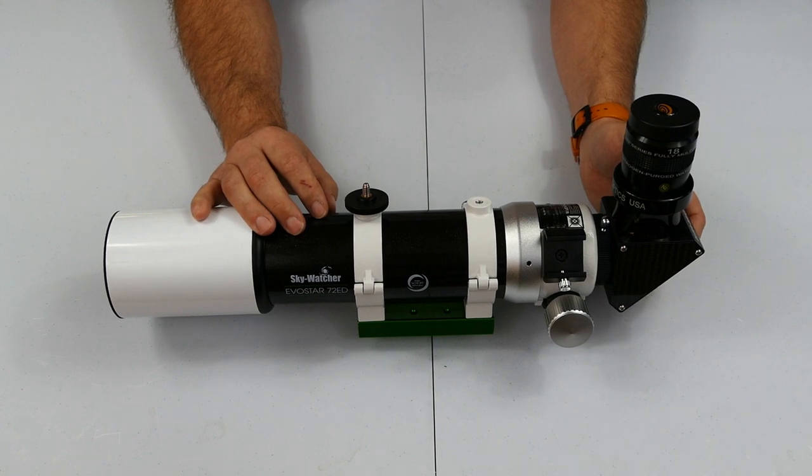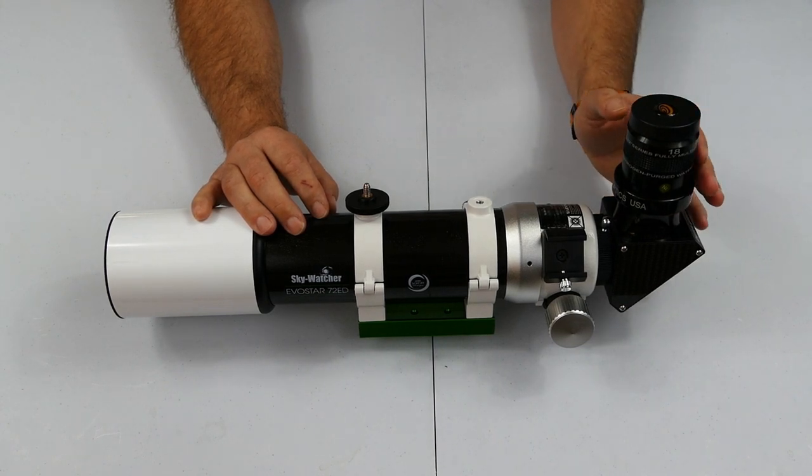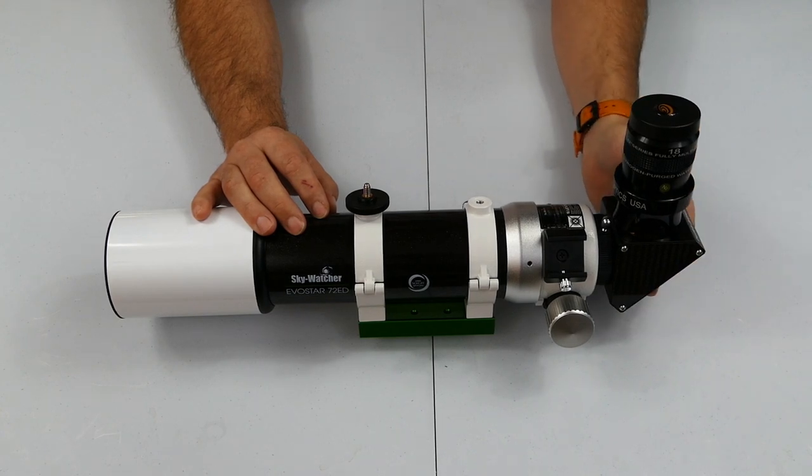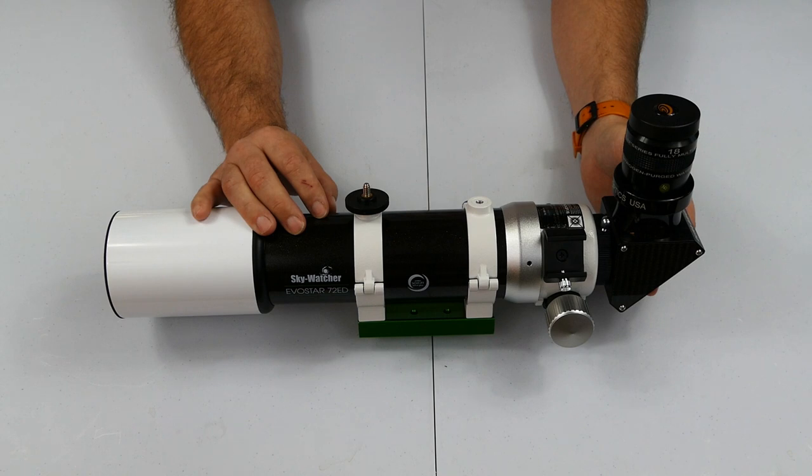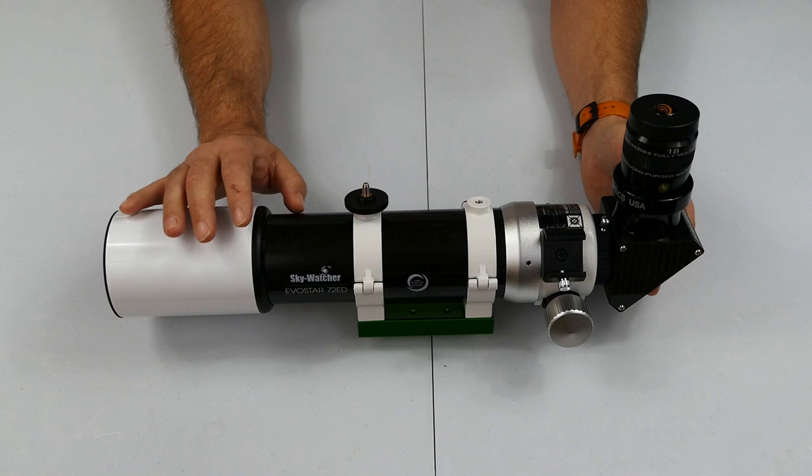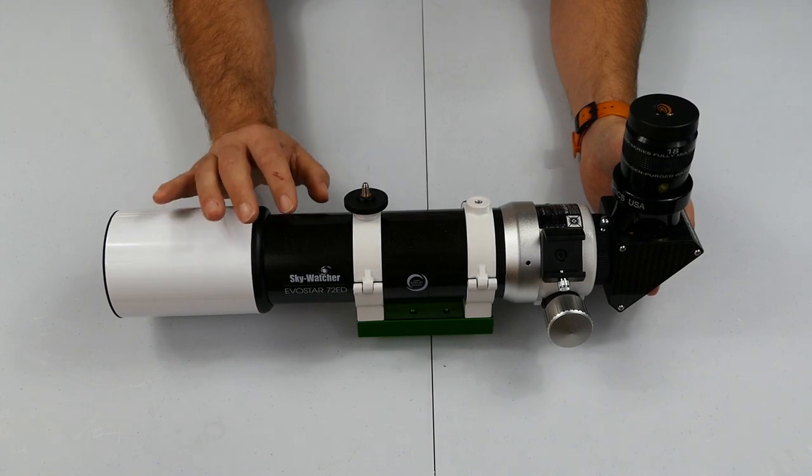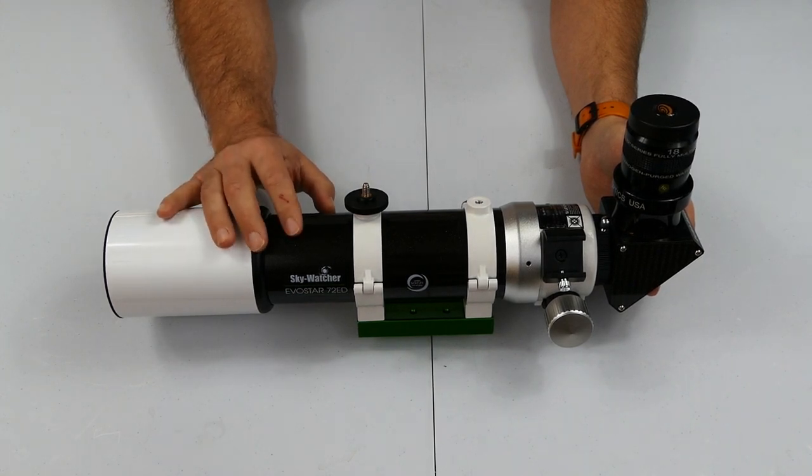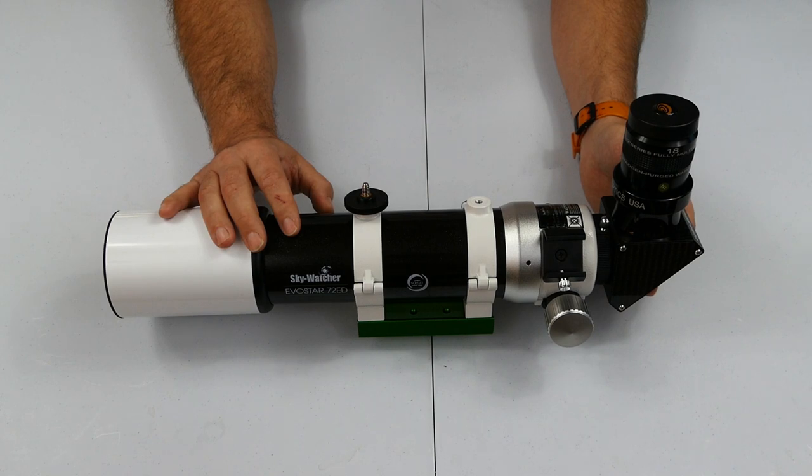Achieving and keeping focus with the Crayford focuser was dead easy, it was silky smooth, the focus didn't slip, it was really really good. If I had to be ultra critical, I would say that at the very edge of the field of view of my 82 degree eyepiece there was the slightest chromatic aberration that was noticeable, but certainly no more than I would expect in even a higher end doublet telescope.